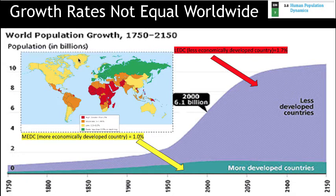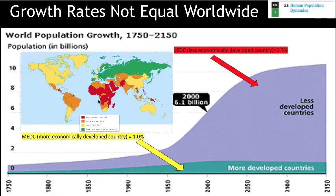It's also important to understand that growth rates are not equal worldwide. World population growth rates are higher in our developing nations and lower in the developed nations. The yellow and green countries on this map tend to have lower growth rates, while the red and orange developing nations tend to have higher growth rates. Less economically developed countries and more economically developed countries — LEDC and MEDC — are terms you'll hear frequently in class to describe these types of countries.